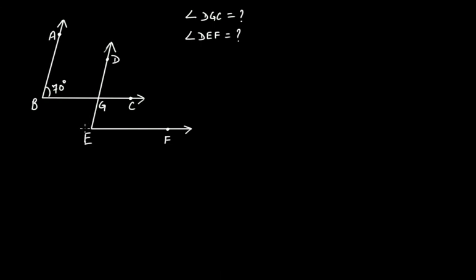In this case, you have to find the value of angle DGC. Focusing on the two parallel lines being intersected by the transversal, the 70-degree angle and angle DGC are actually a pair of corresponding angles. Since corresponding angles in the case of a transversal to parallel lines are equal, angle DGC equals 70 degrees.